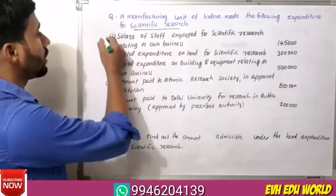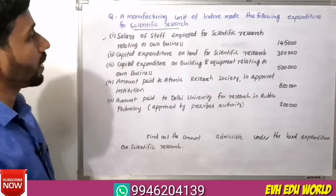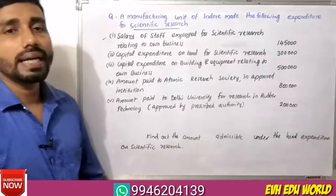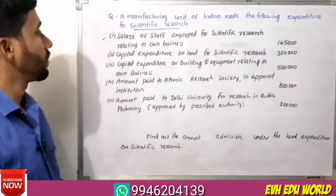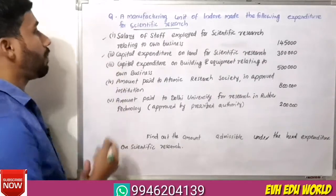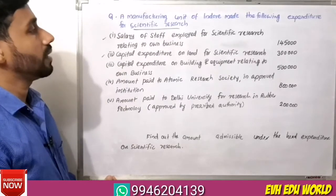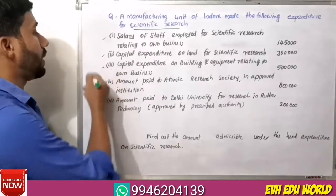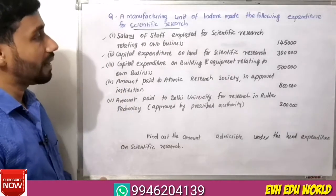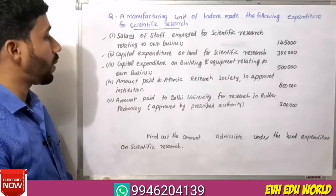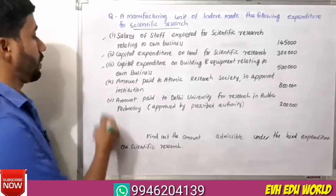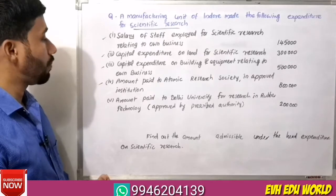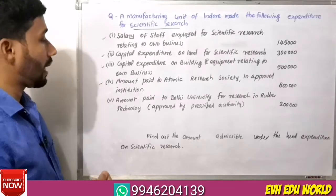A manufacturing unit made the following expenditure for scientific research. First, salary of staff employed for scientific research relating to own business: 1,45,000. Second, capital expenditure on land for scientific research: 3 lakh.